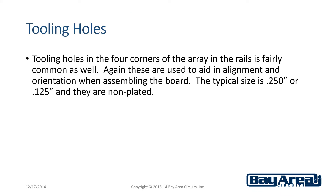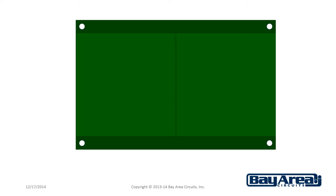Tooling holes in the four corners of the array is fairly common as well. Again, these are used to aid in alignment orientation when assembling the board. The typical sizes are 0.250 inches or 0.125 inches, and they are non-plated. Here's an example of a two-up array with tooling holes in the four corners.